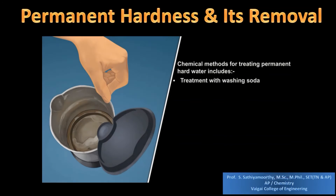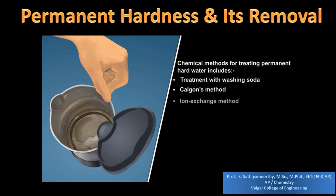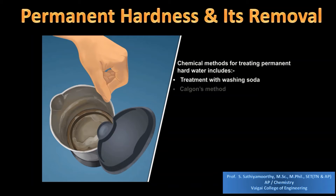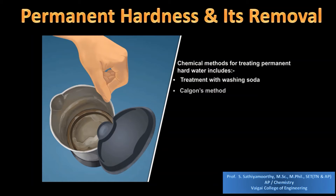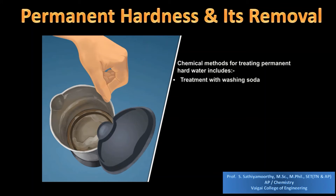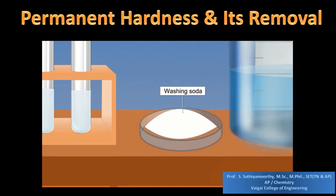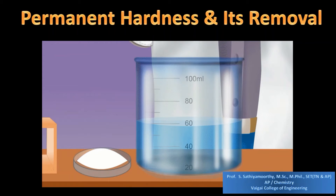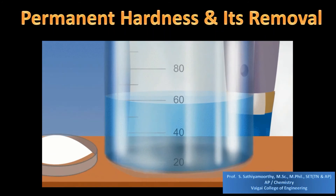We have to move to some other methods by which permanent hardness can be removed. These methods include treatment with washing soda, the Calgon's method, the ion exchange method, and the synthetic resins method. Permanent hardness cannot be removed by simple boiling because the sulfates and chlorides are stable salts and remain in the water sample even after boiling.